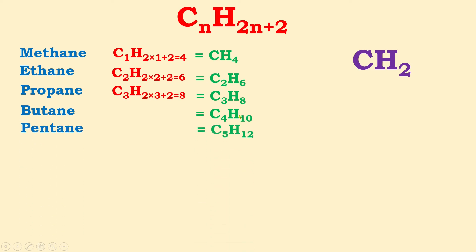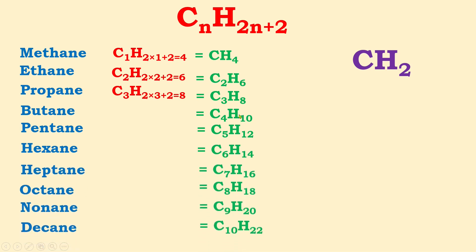Continuing the molecular formulas: pentane is C₅H₁₂, hexane is C₆H₁₄, and then heptane, octane, nonane, and decane follow. For example, for heptane — 'hepta' means seven carbons — hydrogen = 2×7 + 2 = 16, so heptane is C₇H₁₆. This way we can determine the molecular formula of any alkane.